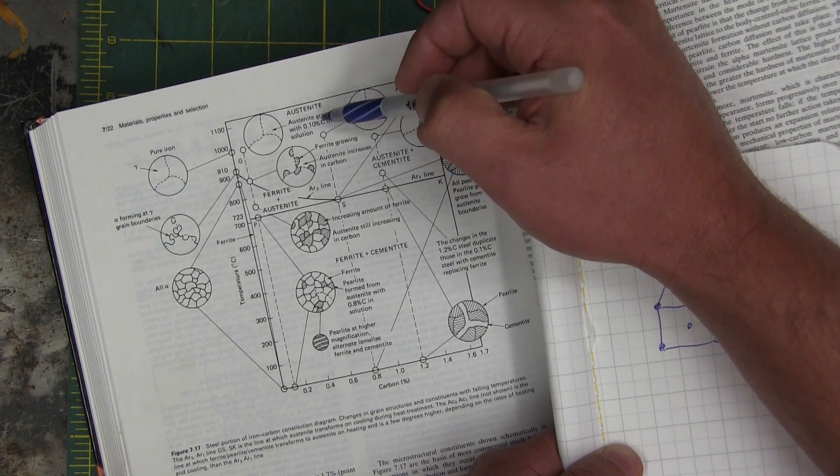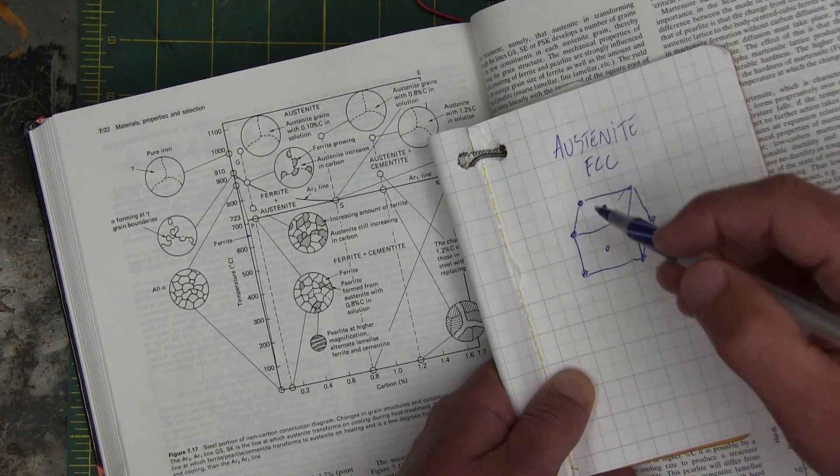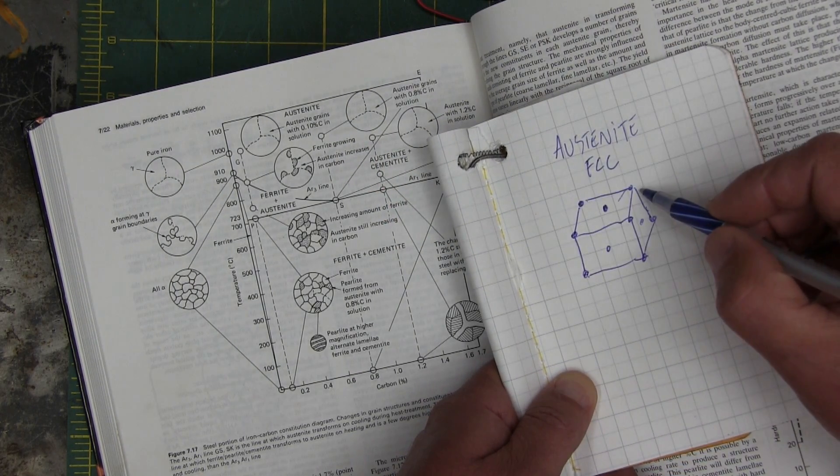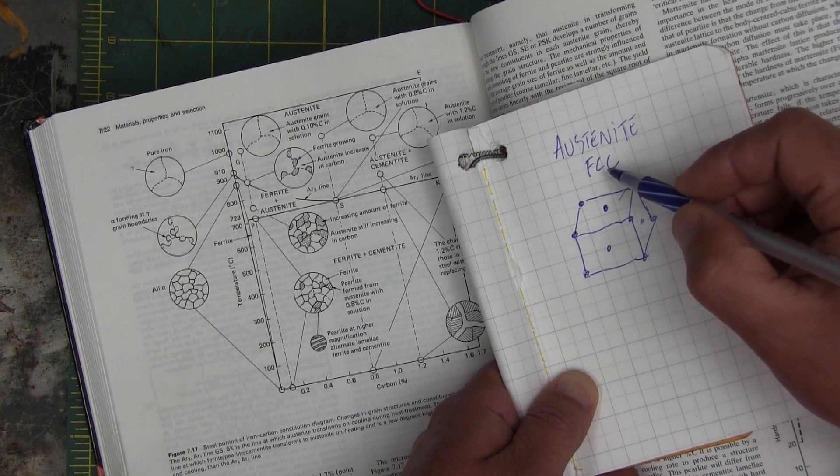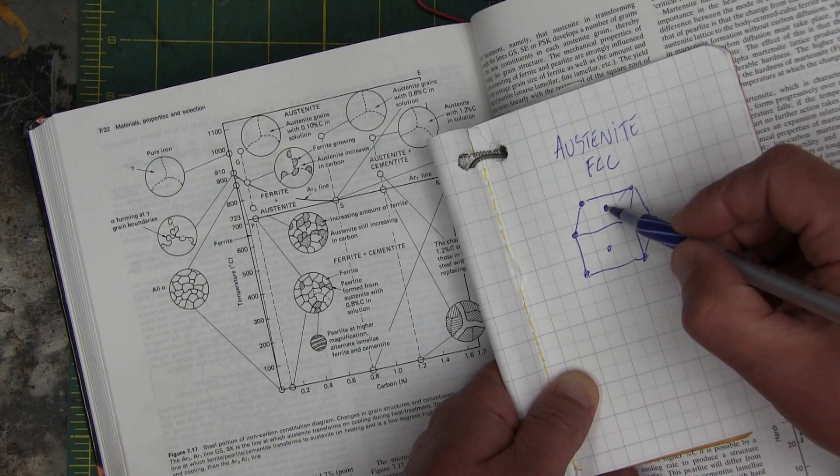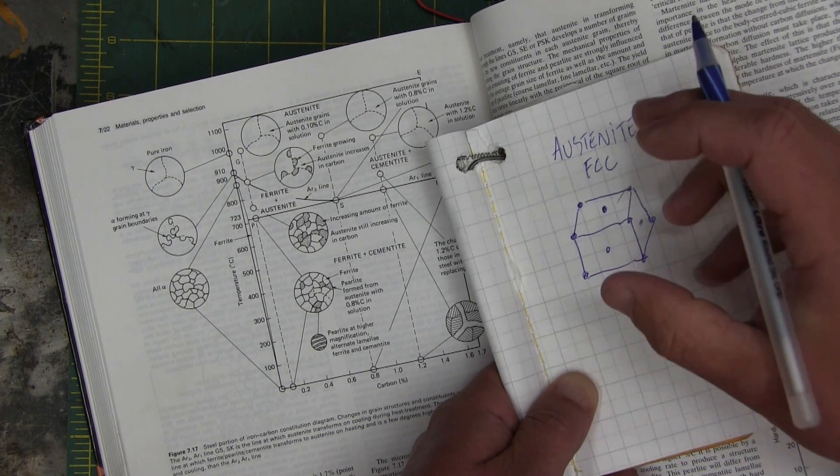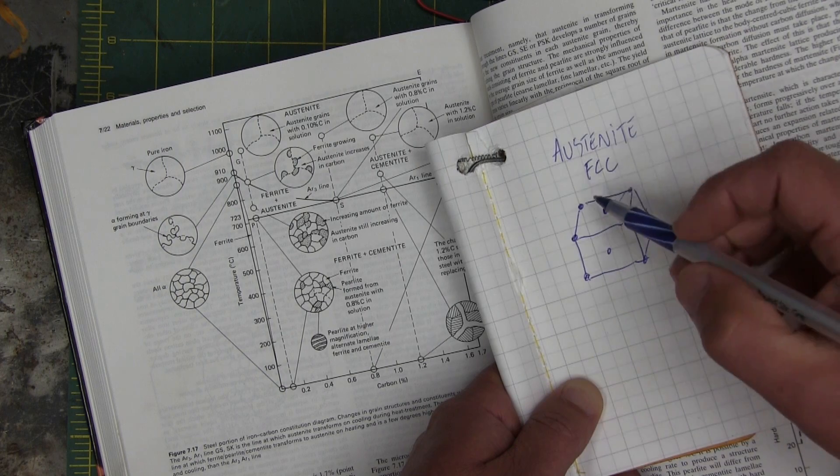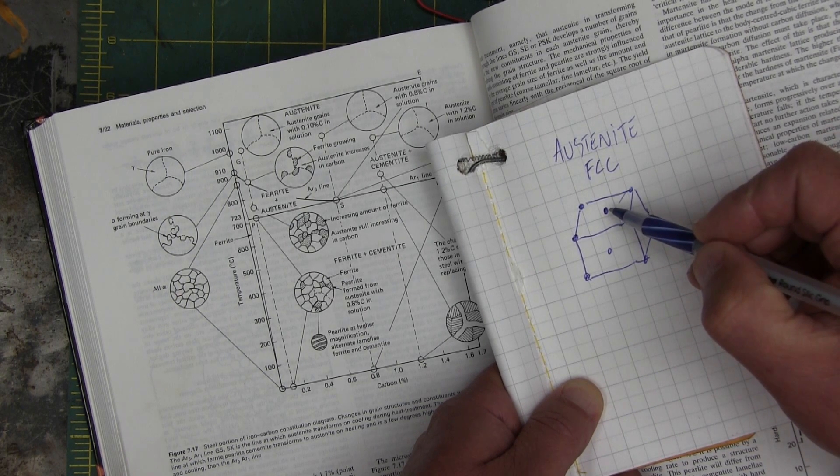Austenite is very good at dissolving carbon. It has a structure like this. If we put in a carbon atom, that means there is an iron atom in the middle of each face. This allows it to dissolve a lot of carbon because it's easy to pop one of these out and put in a carbon atom.